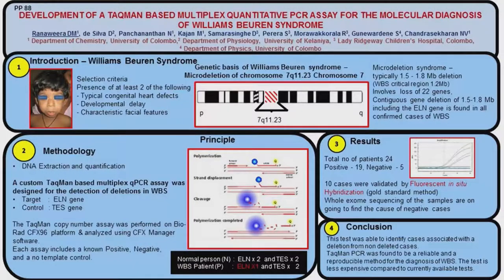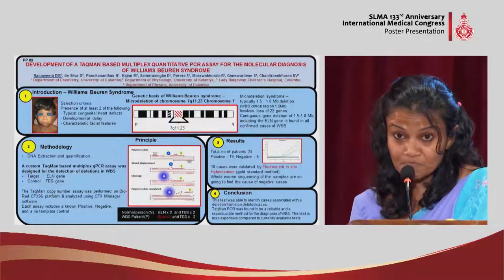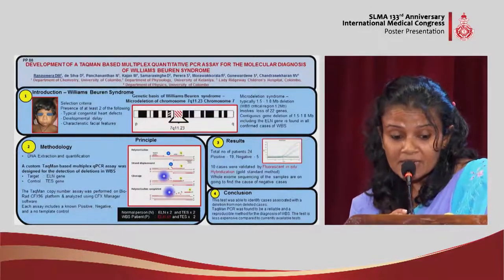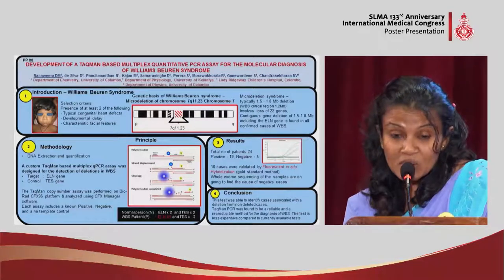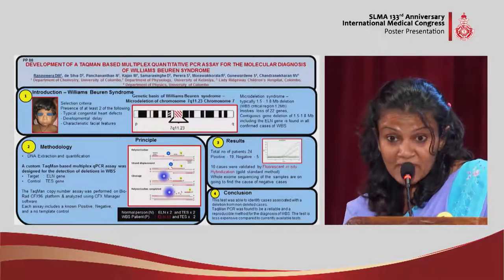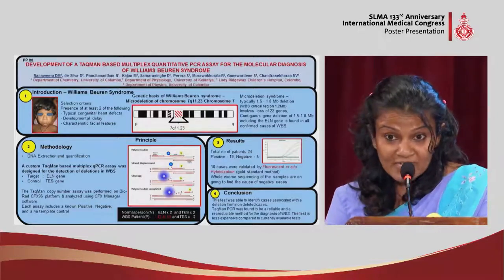Patients were selected based on two main clinical features: developmental delay, congenital cardiac defects, and facial dysmorphism. Williams syndrome is caused by a micro-deletion in chromosome 7 in the Q arm at the 11.23 region. This deletion is about 1.5 to 1.8 Mb in size, and within this region there are some critical genes. This is a contiguous gene deletion which includes the elastin gene, and invariably in all cases of Williams-Beuren syndrome, this region is deleted.